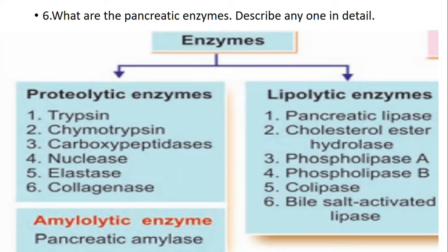The pancreatic enzymes are divided into proteolytic, lipolytic, and amylolytic enzymes. Proteolytic enzymes include trypsin, chymotrypsin, carboxypeptidase, nuclease, elastase, and collagenase. Lipolytic enzymes are pancreatic lipase, cholesterol ester hydrolase, phospholipase A, phospholipase B, and bile salt-activated lipase. The amylolytic enzyme is pancreatic amylase.